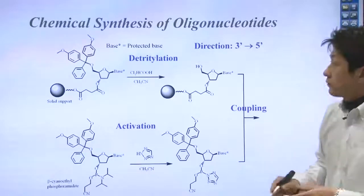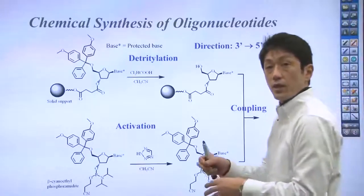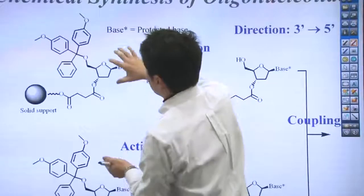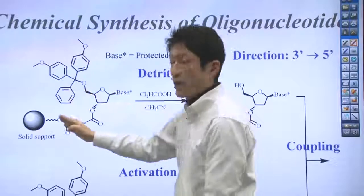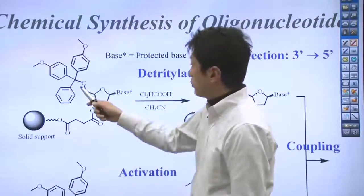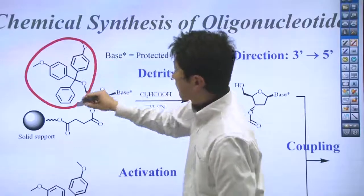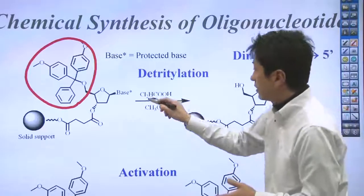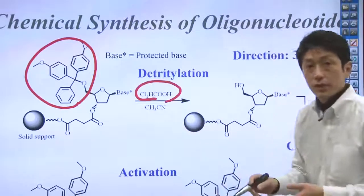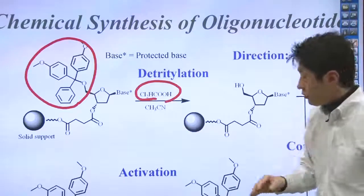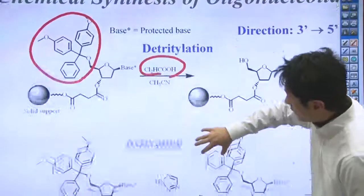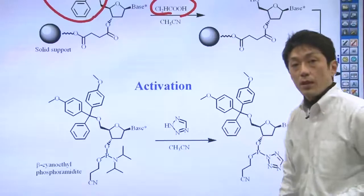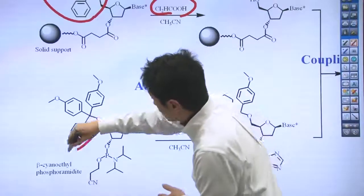The first DNA nucleotide is attached to the large beads. This is the first one. The first one is attached. Then DMT group is right here. The DMT is removed from the nucleotide by adding the acid to the solution. Then, also, you have to prepare for the next nucleotide. This is the next nucleotide. Next nucleotide is also protected by DMT.